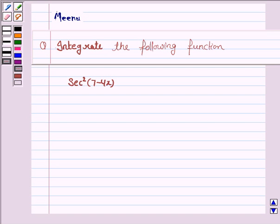Hello students, let's solve the following question on integration. We have to integrate the function secant square 7 minus 4x.